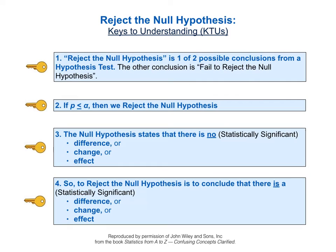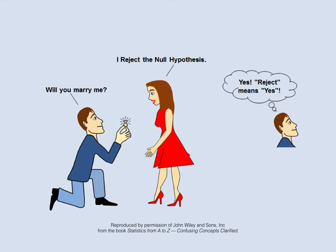Here on one page is the complete list of keys to understanding for the concept of reject the null hypothesis. You may want to pause the video here and read them all together. And here, in case it makes it more memorable, is a preview of the outcome of the marriage proposal scenario. Her response of rejecting the null hypothesis actually accepts the marriage proposal. As her suitor seems to understand, reject in this case means yes. We'll soon explain exactly how that works.